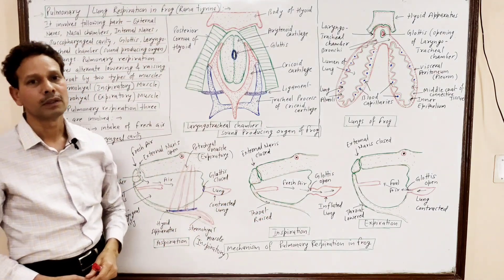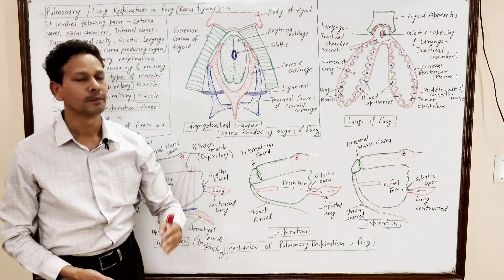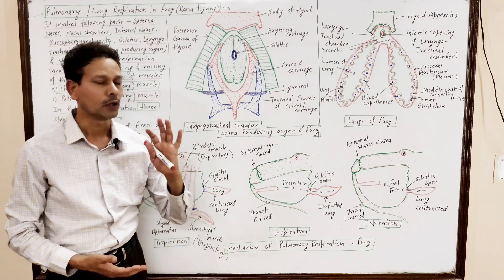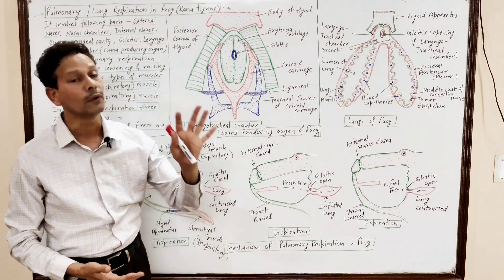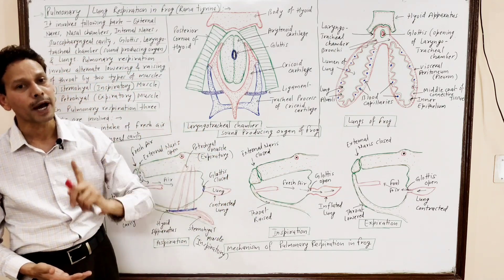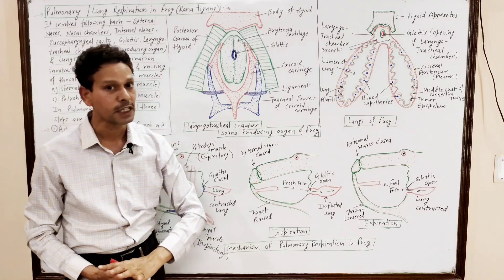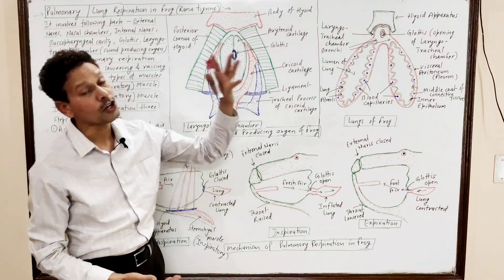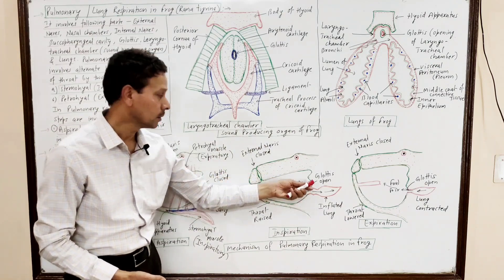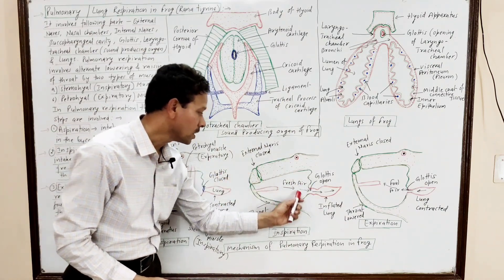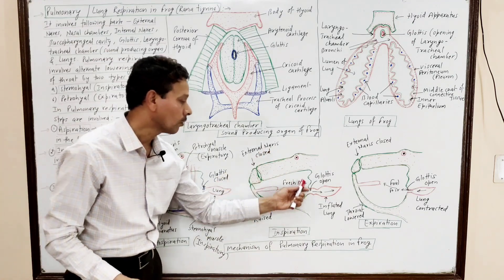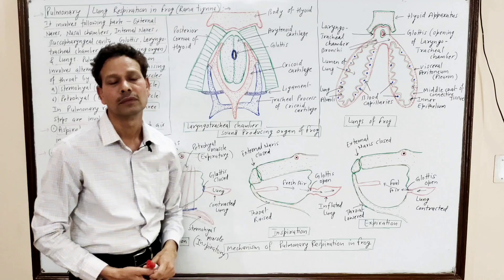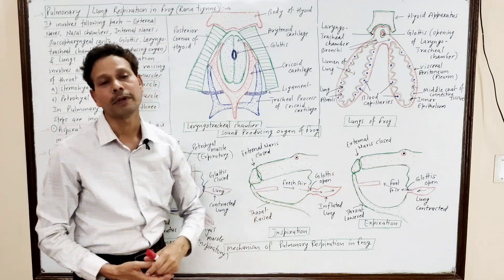This is all about respiration in the case of frog. Cutaneous respiration through skin occurs in normal conditions, particularly during hibernation. When the animal is partially immersed in water as well as on land, bucco-pharyngeal respiration is very common. And when there is more requirement of oxygen, pulmonary respiration takes place.